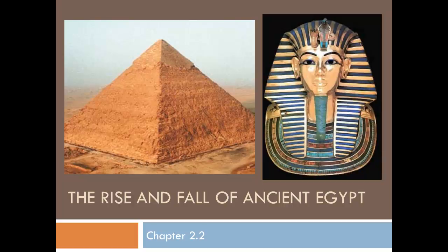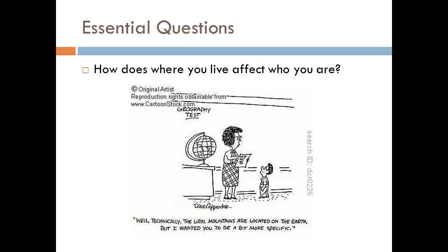Later on in this unit you're going to be looking at the culture of the ancient Egyptians — the mummification, the pyramids, the afterlife. But today our purpose is to give you some background information on these people so that when we look at the culture it makes a little bit more sense. Our essential question today is: how does where you live affect who you are? We've looked at all of our civilizations through this lens — specifically how geography affects how a civilization is able to develop.